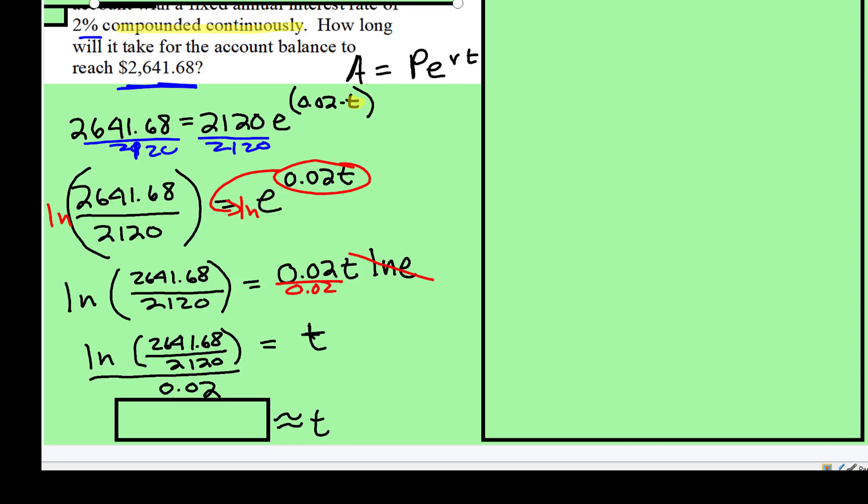So these are the keystrokes I'm going to have you do. So LN, it gives you a left parenthesis, so 2641.68, divide, 2120, close parenthesis, divide, 0.02.